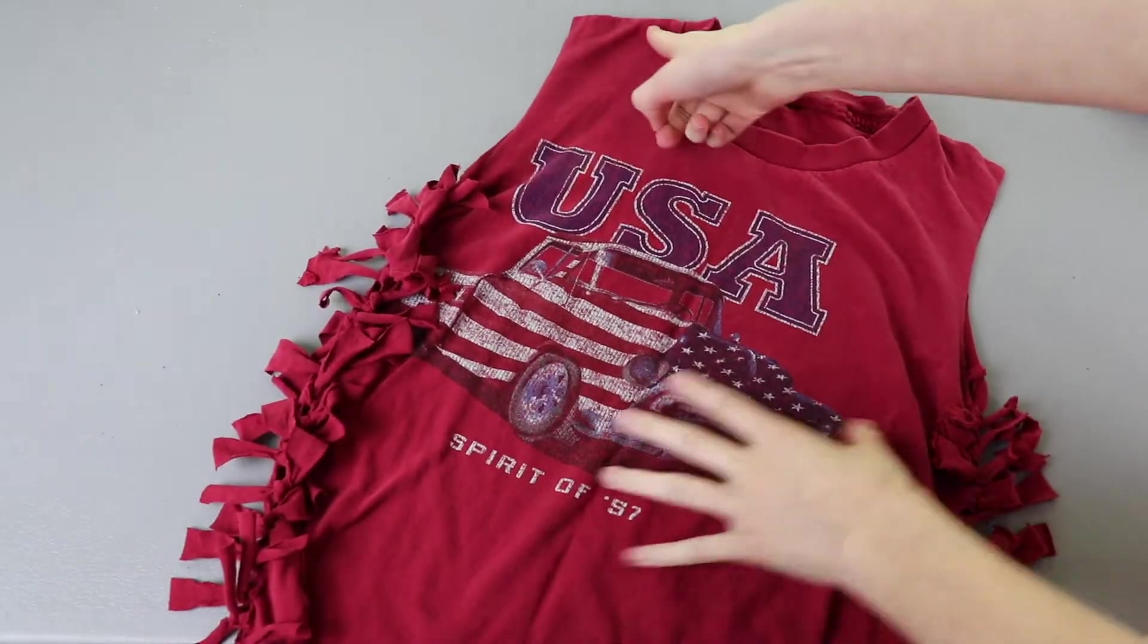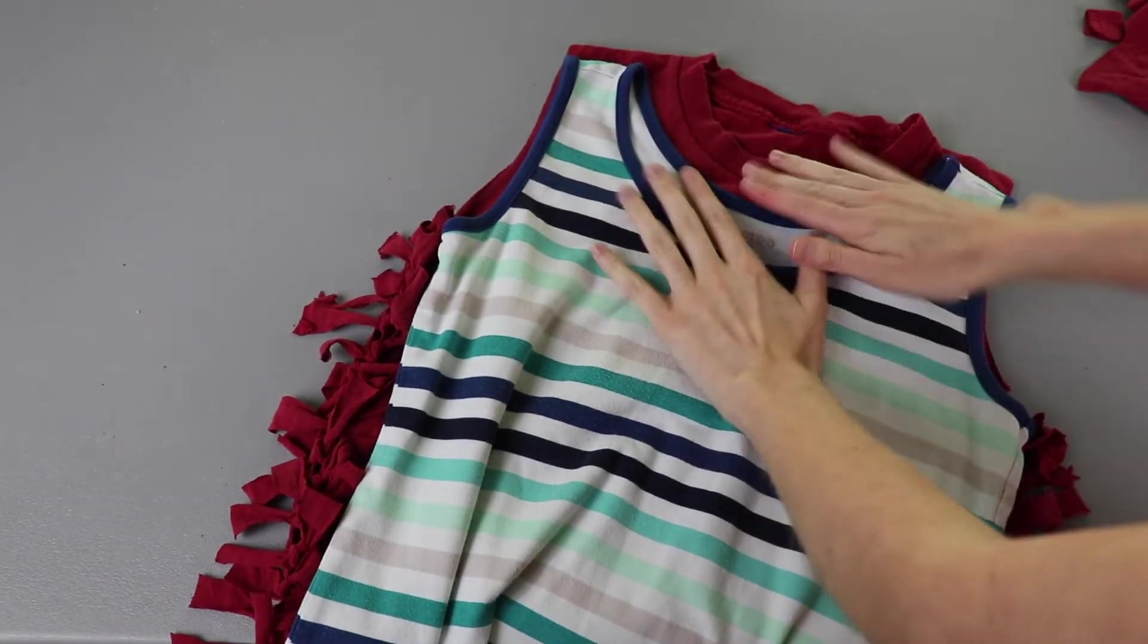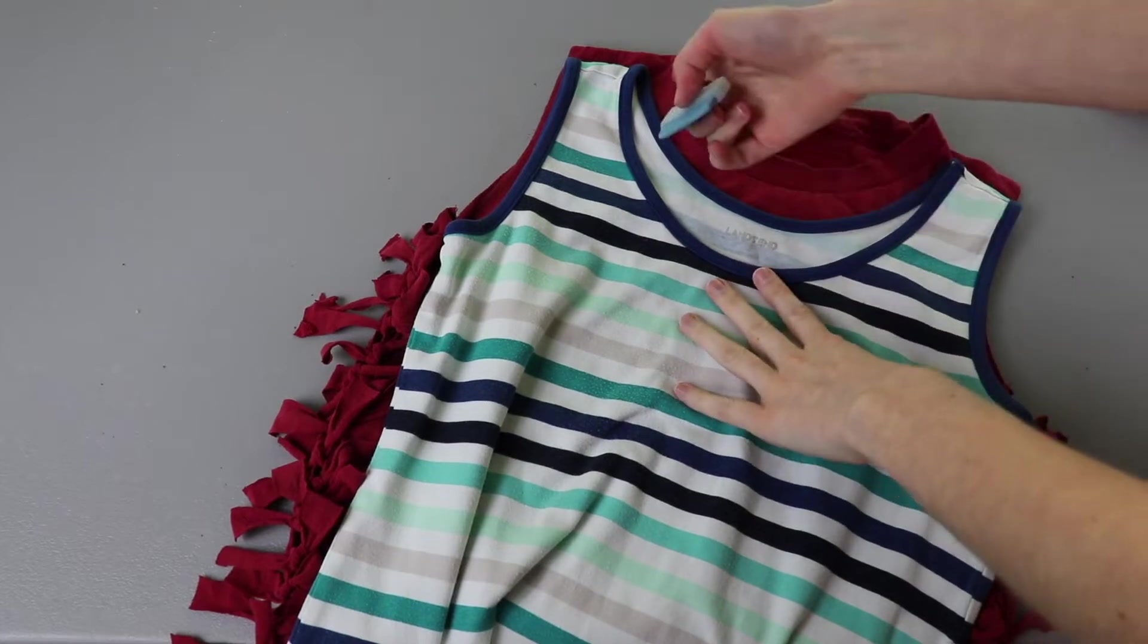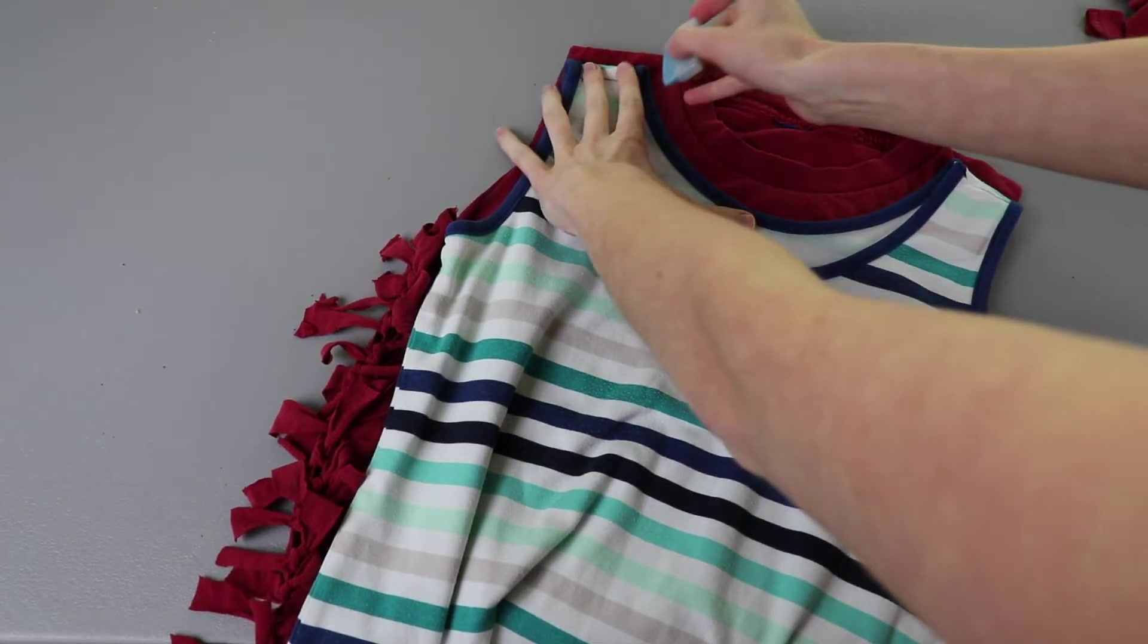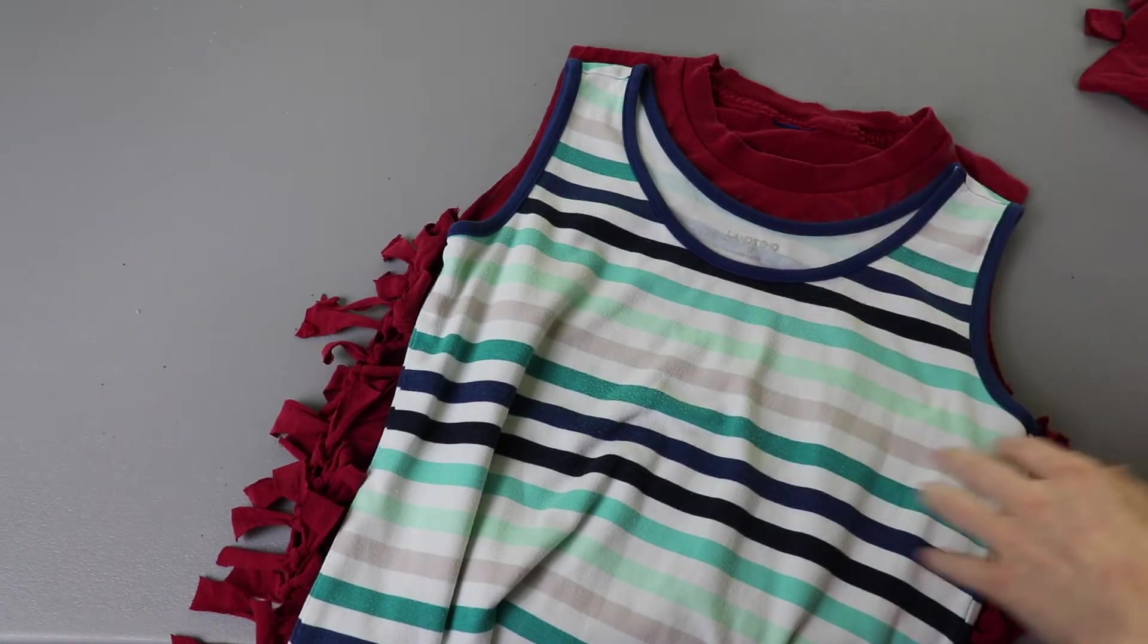So last thing I need to do is I need to cut the neck and I'm going to use this tank top for the shape but I'm going to come down a little bit lower than this tank top is, but I'm just using this so I can get that curved shape. And I'm going to make the front and the back both come down the same amount so I'm going to cut through both layers.